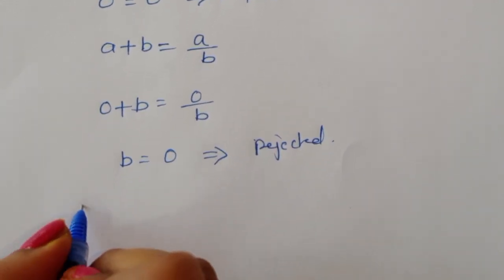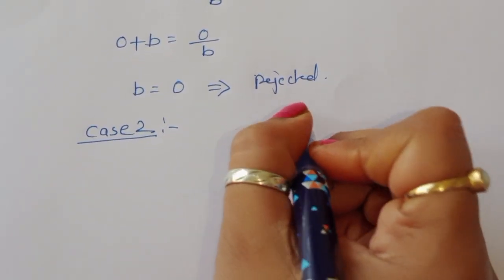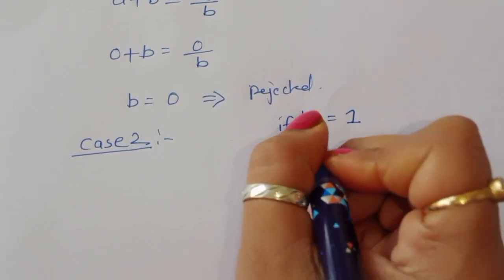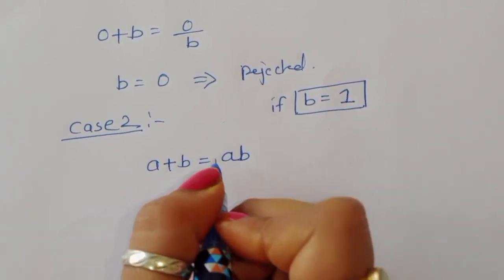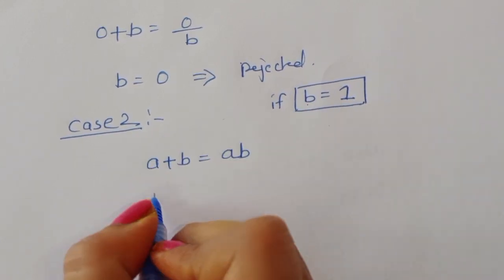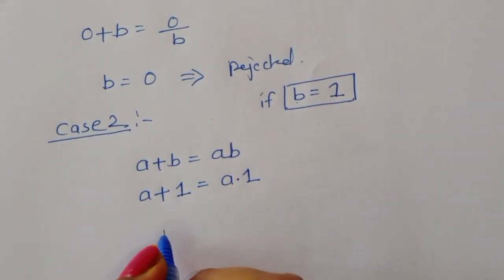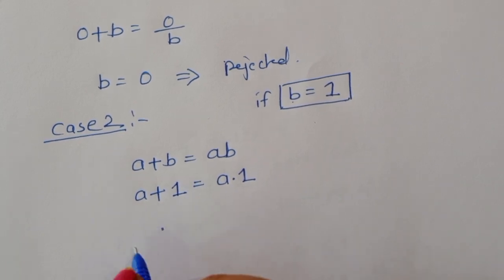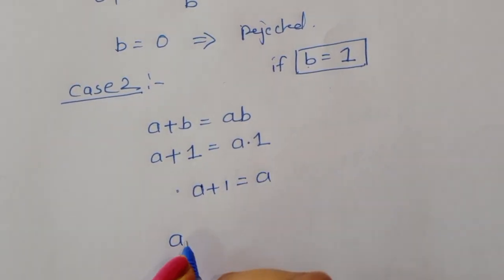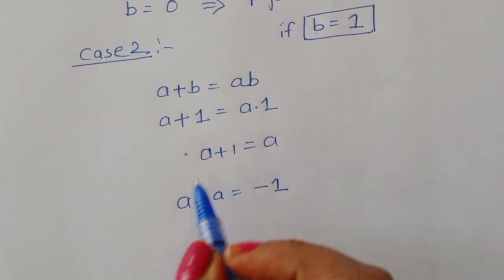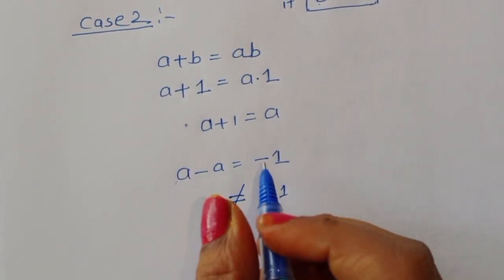Case 2, b = 1: From equation 1, a + 1 = a·1, so a + 1 = a, which gives 0 = -1. This is not possible, so rejected.